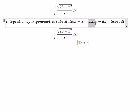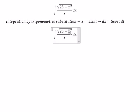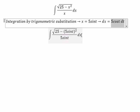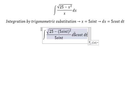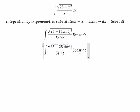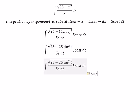We substitute this into the integral. We change dx for 5 cos t dt. Under the square root, we get 25 minus 25 sin squared t. The square root of 25 gives us 5.